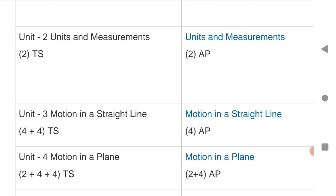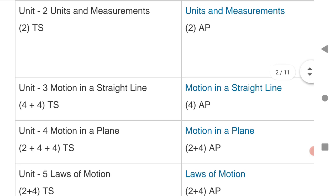Third unit, that is motion in a straight line, four plus four marks for Telangana and four for AP.